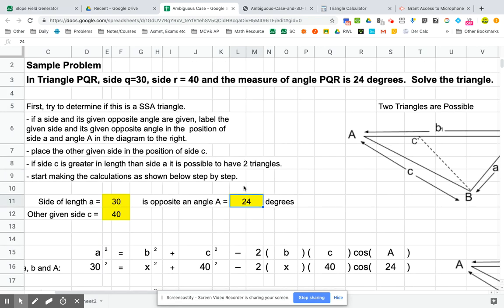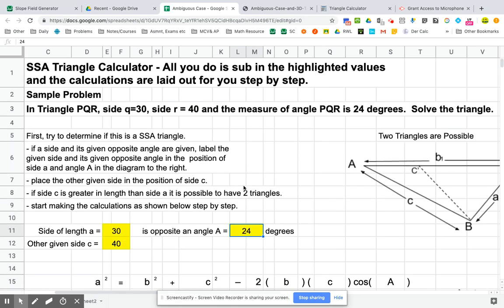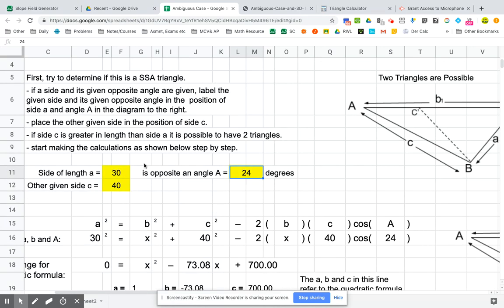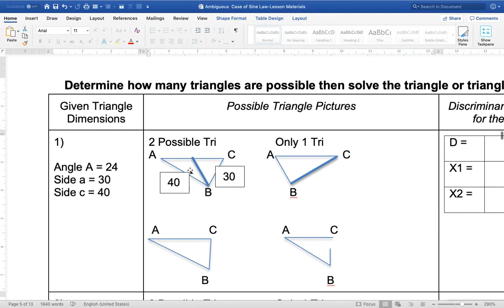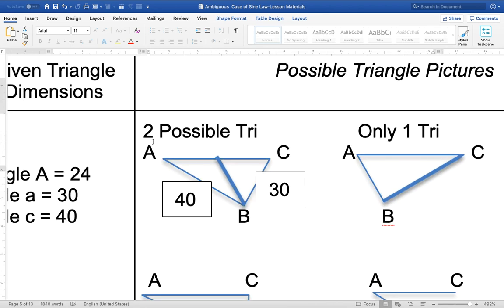So what I've done is I've set up the entire process in a spreadsheet where what you're going to be able to do is fill in this 30, 40 and 24, and then all of the calculations are generated for you. So you can look at this and compare it to your own calculations. And I'm going to go back here, just back and forth. So this is what we're working on right here. So side C is 40, side A is 30, and angle A right here is 24 degrees.